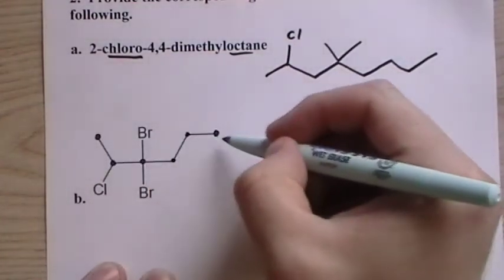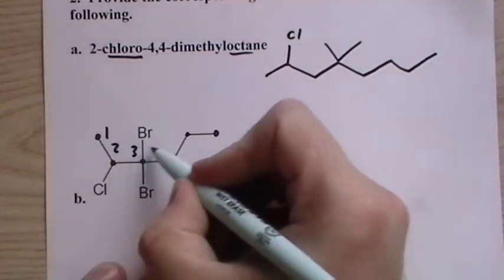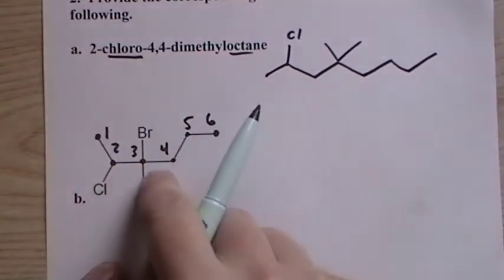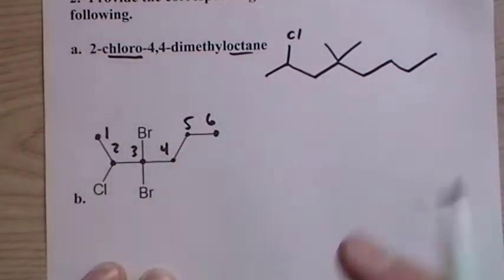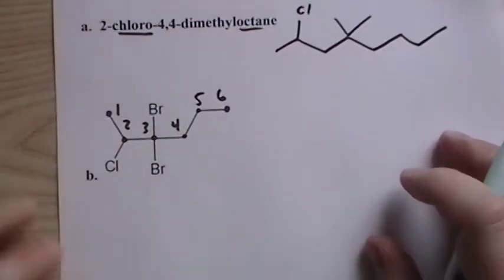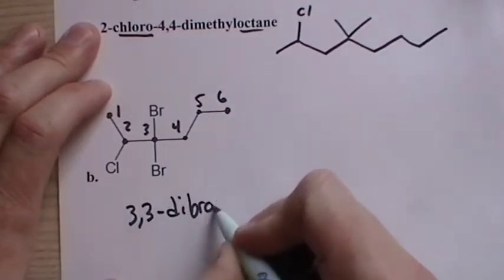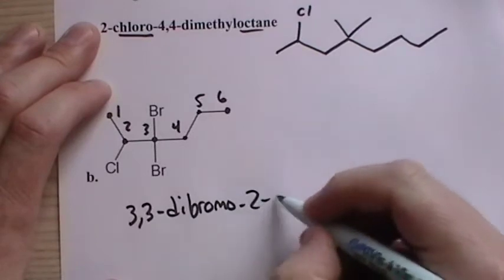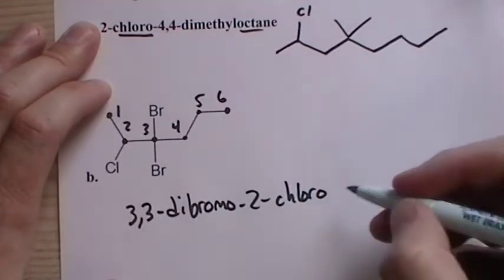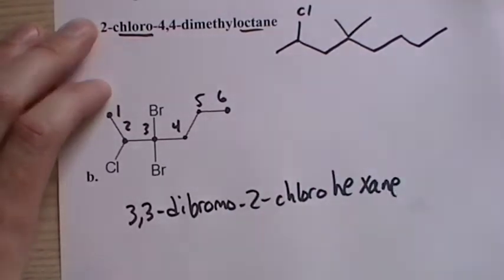So we see that we have six carbons, so that's hexane. We see that we number from this side because we meet up with the chlorine first. Carbon two from this side, we wouldn't meet up with the bromines until one, two, three, four. So the bromine comes first in the alphabet, the B comes first. So three, three, dibromo, two, chloro. Make sure you change - it has to be bromo, not bromine, and then bromo and chloro. And I said, what, hexane? And there we go.